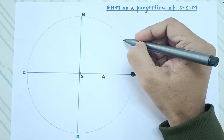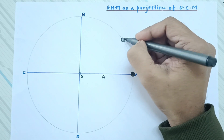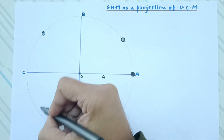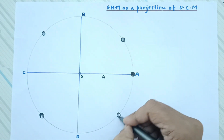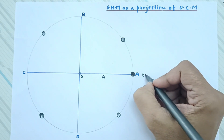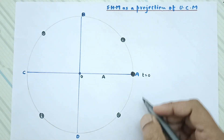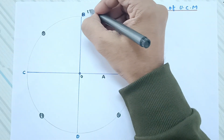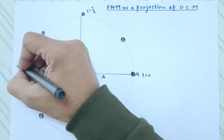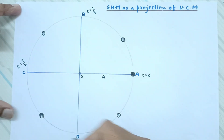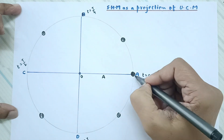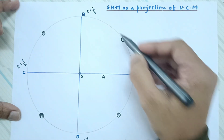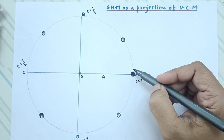The particle starts its journey from point A at time equal to 0. It reaches one-fourth of the circular distance at time T/4, then at T/2 it is halfway, at 3T/4 it has covered three-quarters, and at time capital T — the time period — it completes one full circumference. Capital T is the time taken to complete one full revolution.